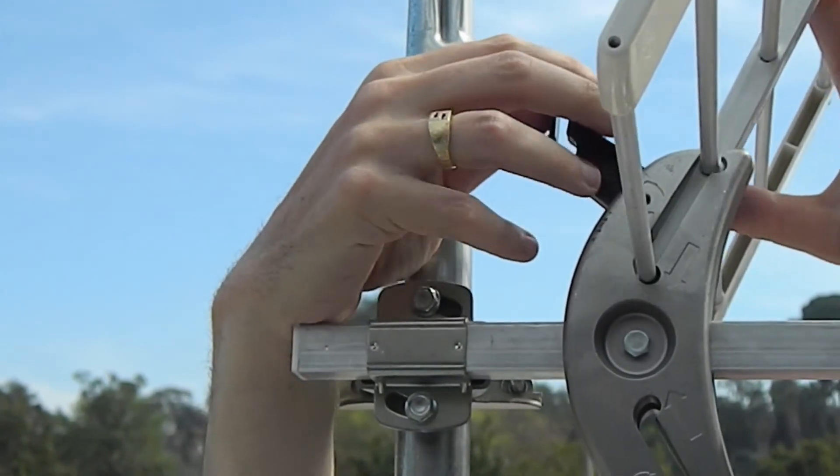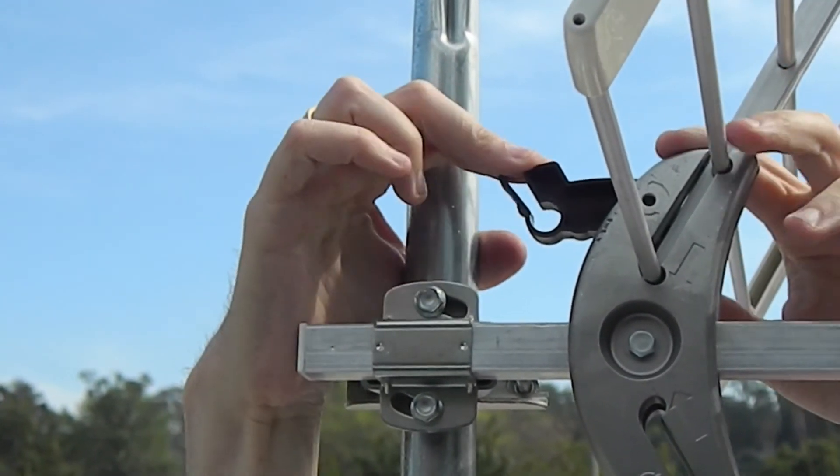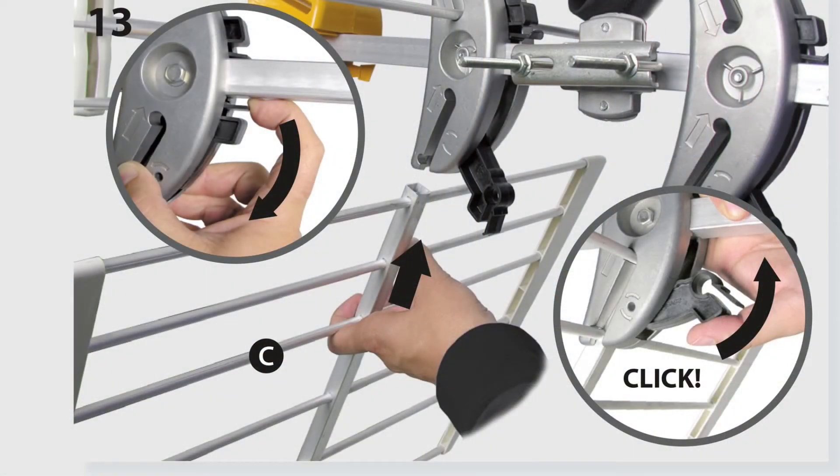Once you've got it in, push down on the plastic tab and click it in place. Do the same thing with the bottom reflector. Again, slides in and then click in place.